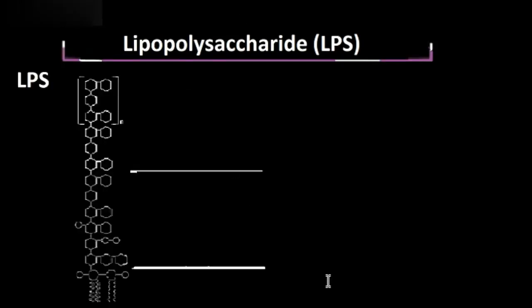Now you are looking at a more detailed image of LPS. At the base here we have the lipid A, which is hydrophobic, which allows it to be embedded in the outer membrane.